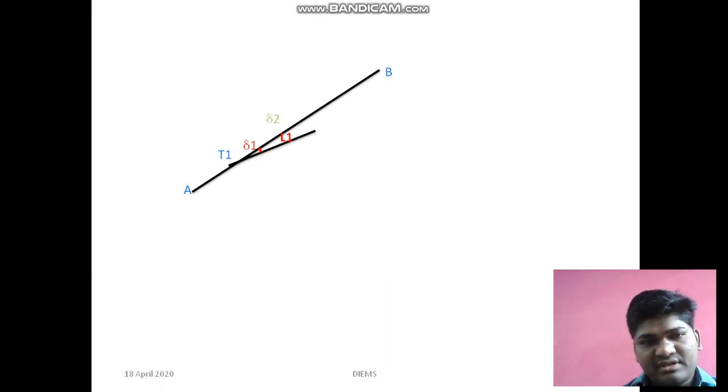After marking L1, from the same point we mark the second angle delta2, which I have already calculated. I will show you how to calculate that. After that, on the delta2 line we mark second chord L2, but we have to mark that chord from the point where L1 ends, not from the T1 point.